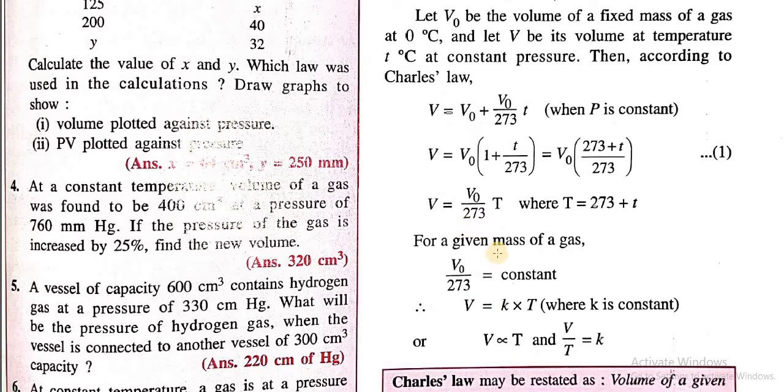So we can replace this by constant k. For example, V equals k times T. Now, if we remove this constant, we can put a directly proportional sign. So V is directly proportional to T.